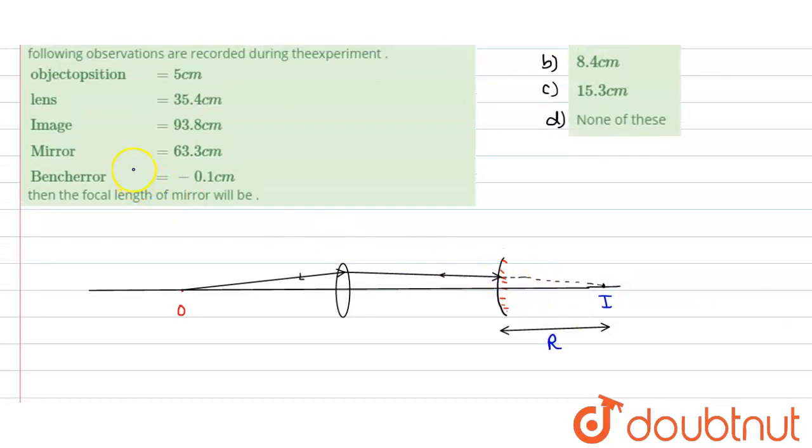We know the location of our mirror, it is given as 63.3 centimeter. What is the location of the image? Image would be formed here when there is no convex mirror. When there is no convex mirror, the image is formed at position 93.8 centimeter.